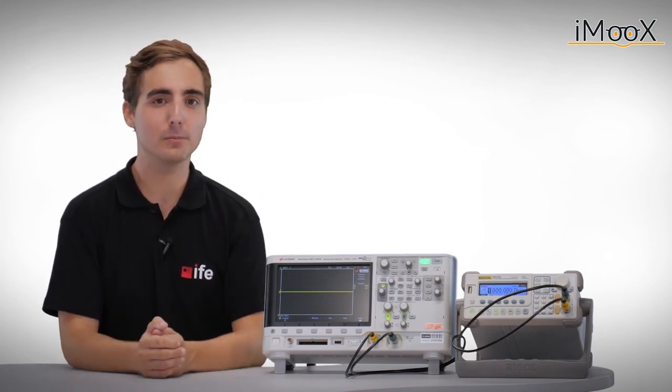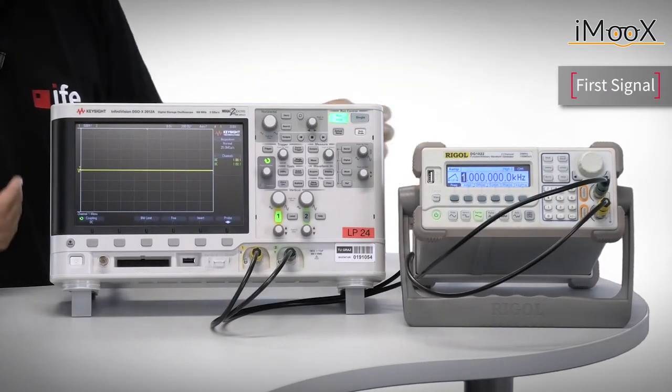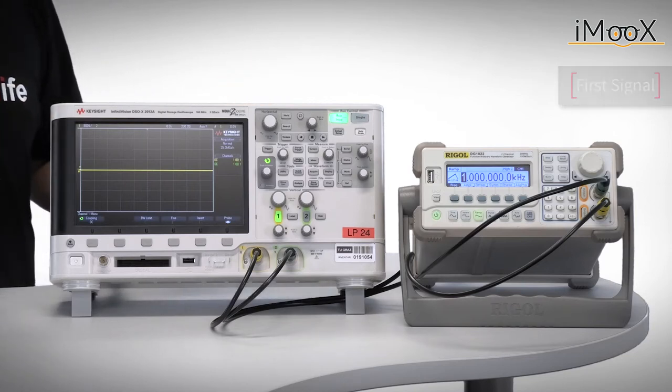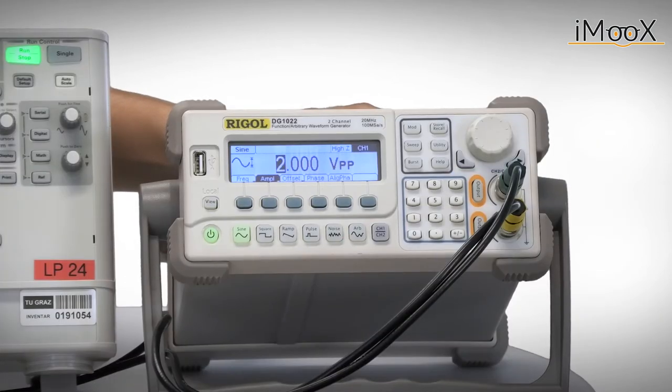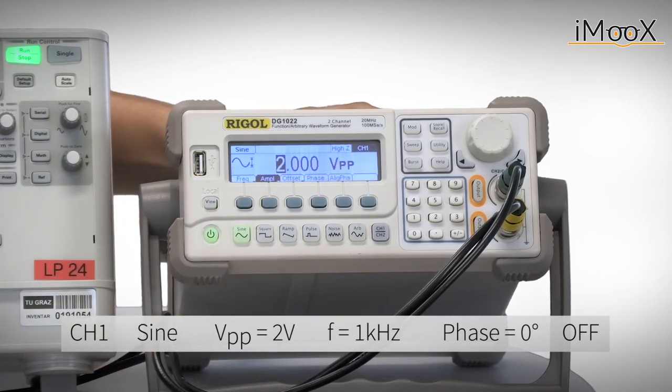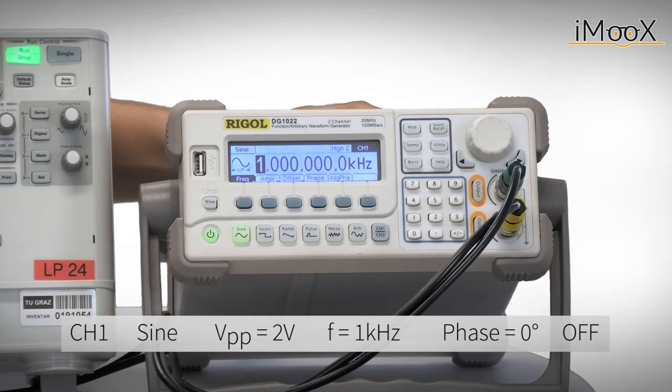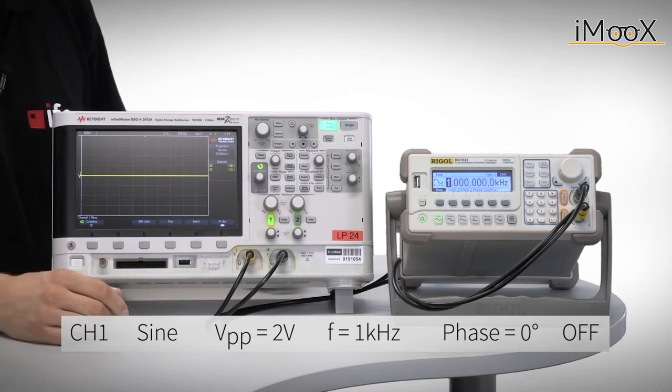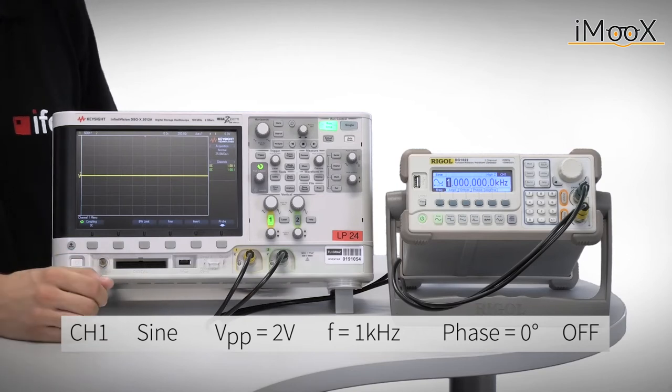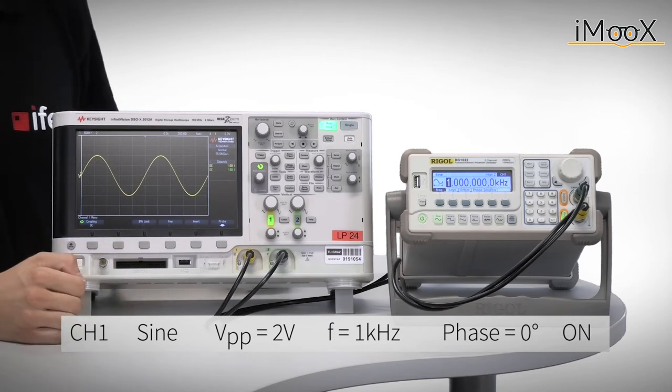Let us now continue by showing you a simple example. Our test setup only consists of a signal generator and the scope itself, and these are connected by simple coaxial cables. The signal generator is set to generate a sine signal with an amplitude of 2 volt peak to peak and a frequency of 1 kilohertz. In the beginning, we just see a straight line as the signal generator output is not activated yet. If we now enable the output of the signal generator, we see the expected sine wave.